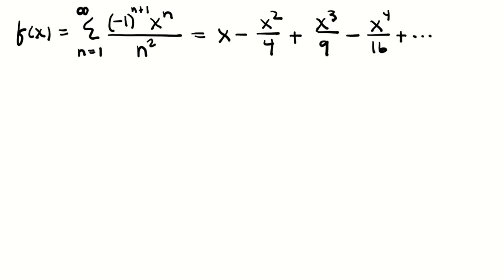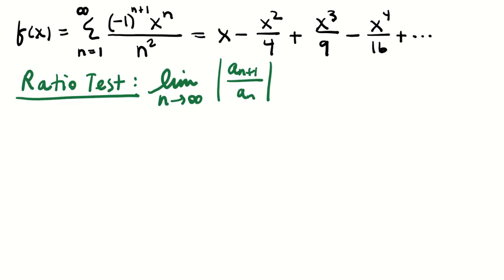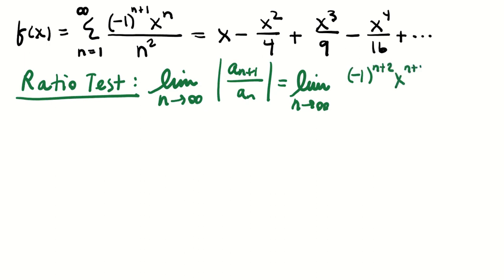The last type of example is when we're given a Taylor series and need to find the interval of convergence using the ratio test. The ratio test means computing the limit as n→∞ of the absolute value of the ratio of the next term to the previous term.